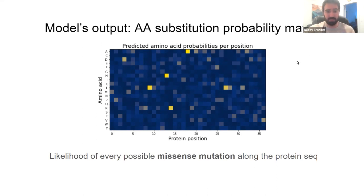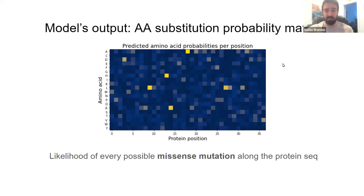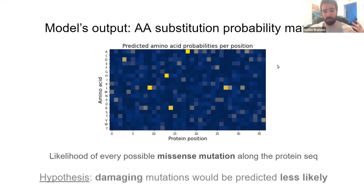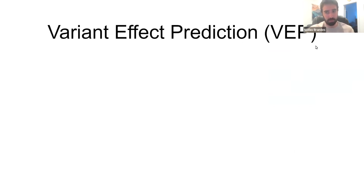This model is trained on wild-type sequences — protein sequences selected throughout evolution in every organism we have data for, from humans to primates, plants, bacteria, and viruses. We know that one of the main forces shaping evolution is fitness, and evolution would disfavor sequence variations that damage proteins. That naturally leads to the hypothesis that damaging mutations will be predicted as much less likely by these protein language models — so we can use these models to do variant effect prediction.